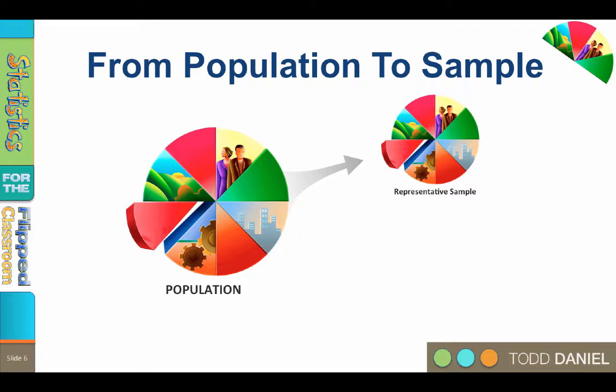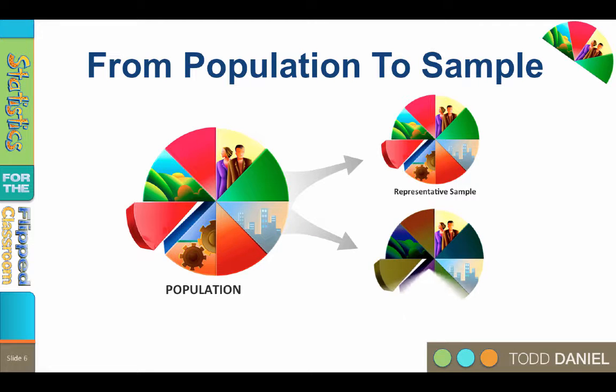But if the sample is not representative, then what we learn from the sample does not generalize back to the population. And this, in a nutshell, is what makes bad research bad.